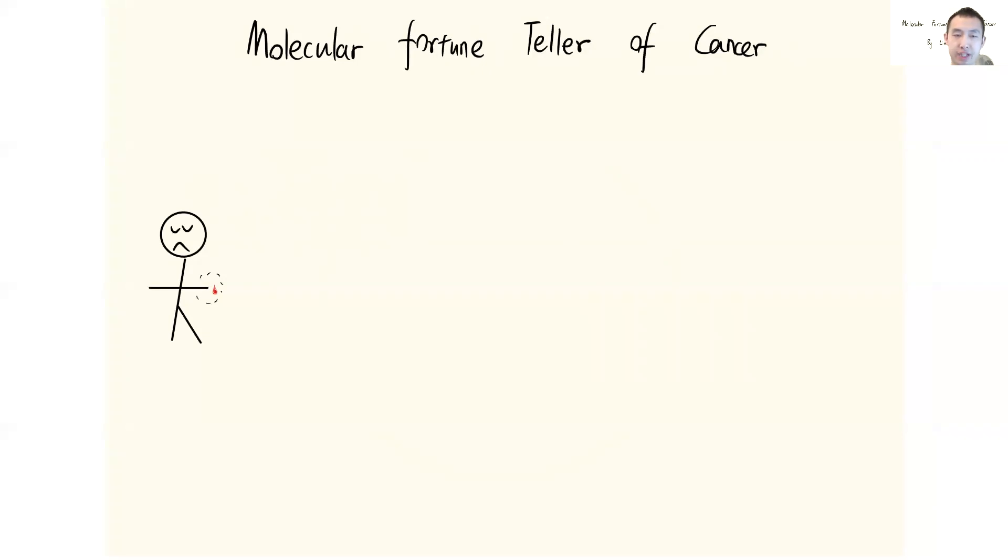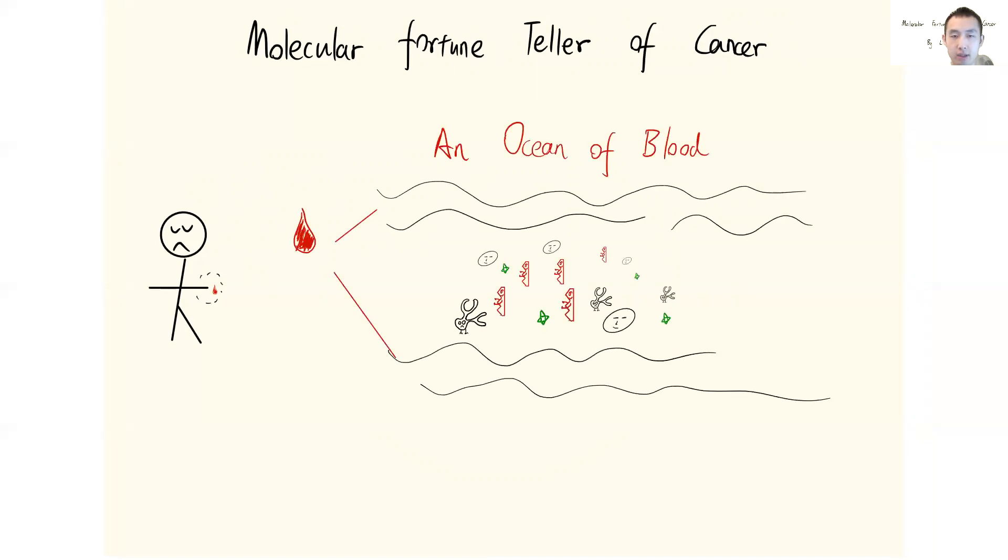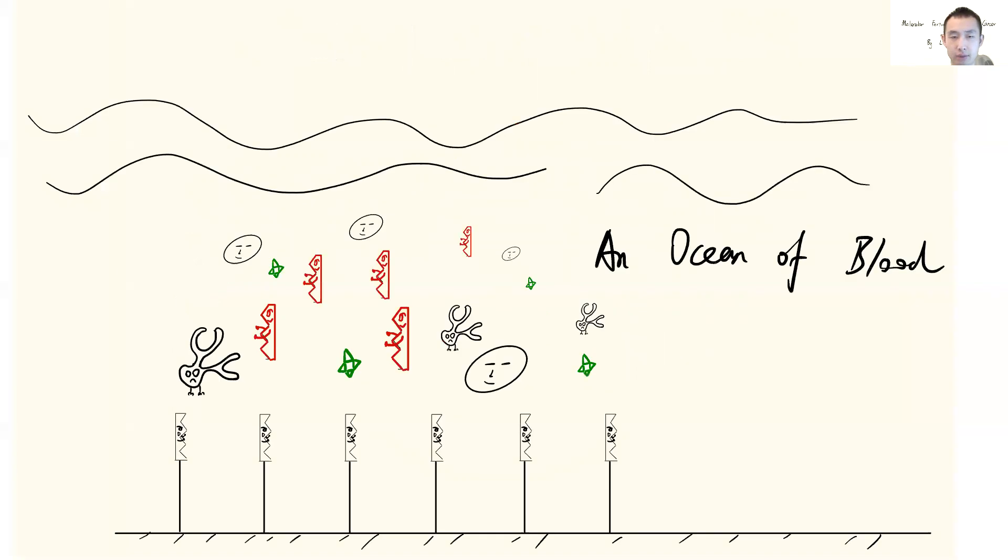The early steps are kind of similar to that of the PCR approach. So let's say there is a potential cancer patient and we take that small droplet. And if you look at that, it is like a huge ocean full of different components, including nutritions such as proteins, sugars, and fatty acids, as well as important components for human bodies like antibodies and blood cells.